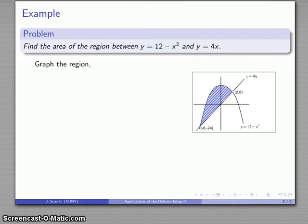So there's our region: y equals 12 minus x squared and y equals 4x. Note that these two curves intersect in two places.